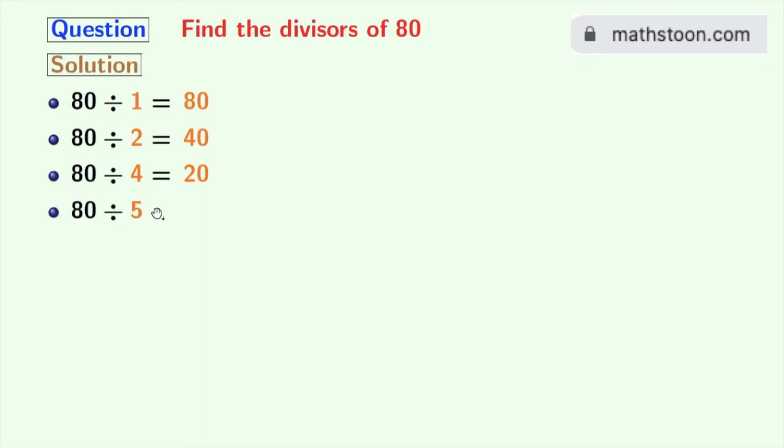80 divided by 5 is 16. So, 5 and 16 are the divisors of 80.